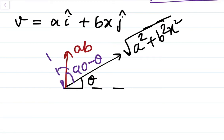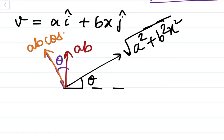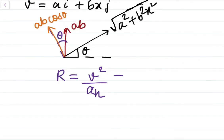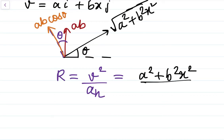This angle with the vertical is 90 minus theta, and the angle with the velocity direction is theta. So when we break up the components of the acceleration ab, the normal component comes out to be ab cos theta. Now radius of curvature equals V squared by aₙ, so it is (a² + b²x²) divided by ab cos theta. But we still need to find the value of cos theta.